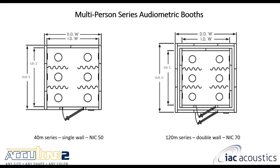Multi-person testing suites are available in 40M single wall and 120M double wall series. A master jack plate is installed on the front wall, and each station — with a stool in front of it — has a station jack plate. All station jack plates run to the master jack plate. Each station plate has three quarter-inch jacks; the master jack plate has enough quarter-inch jacks to cover all stations. Custom jack plates with XLR, nine-pin, VGA, or HDMI connections can also be arranged.